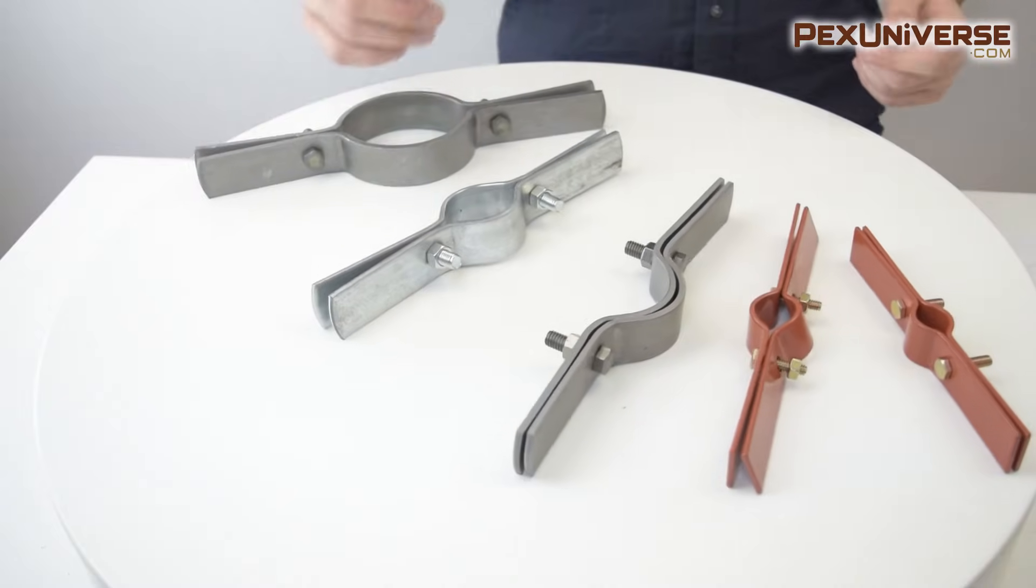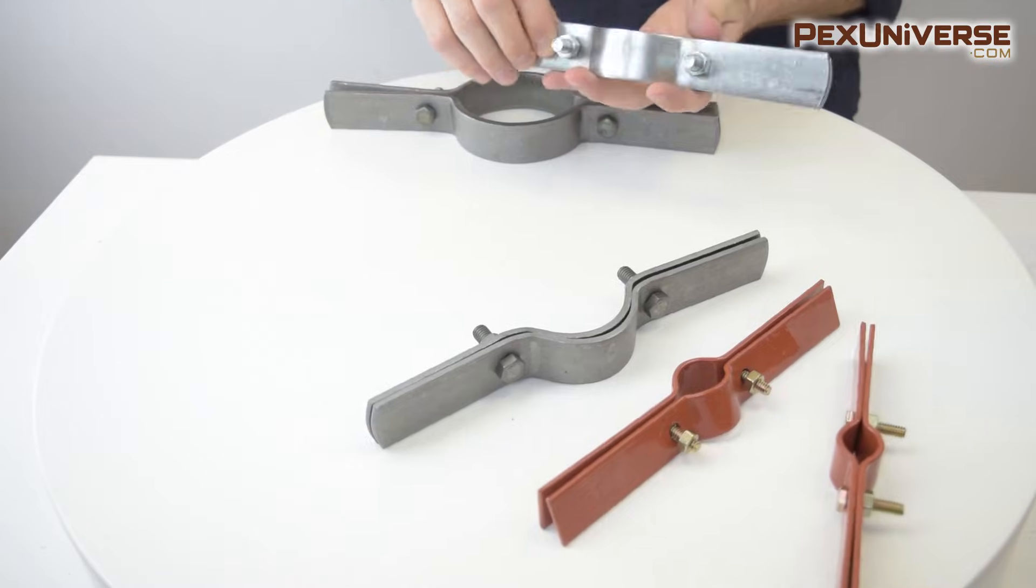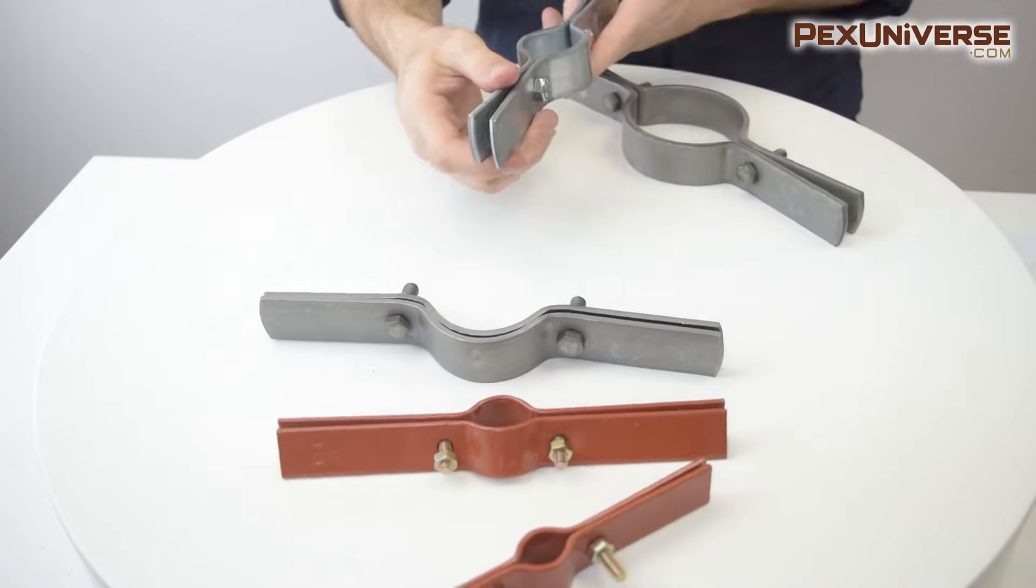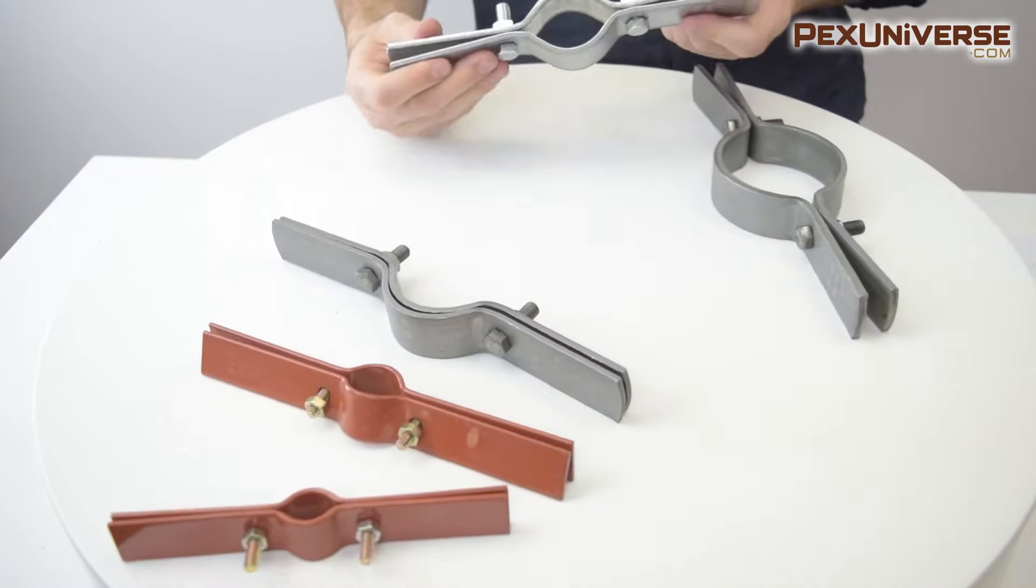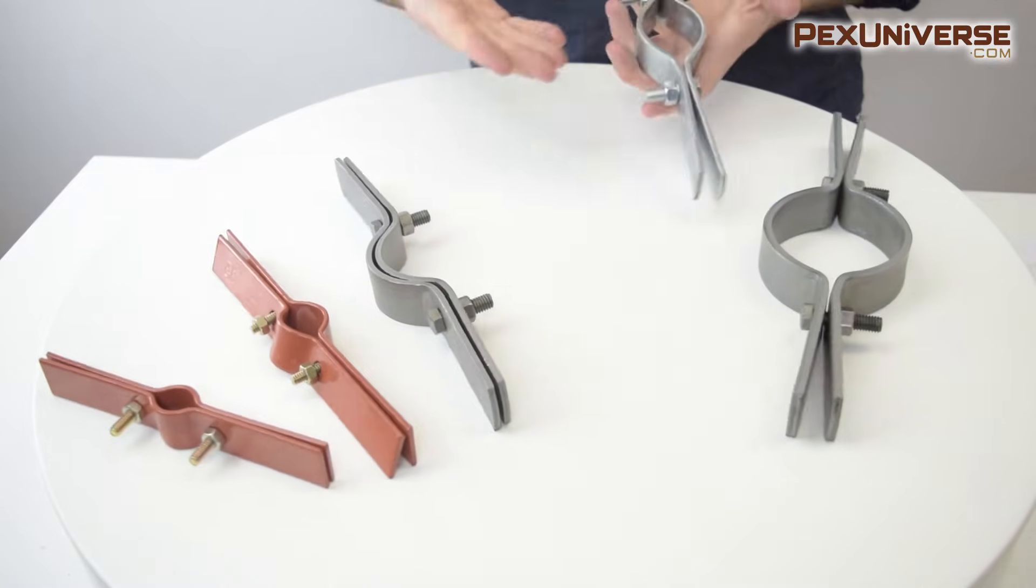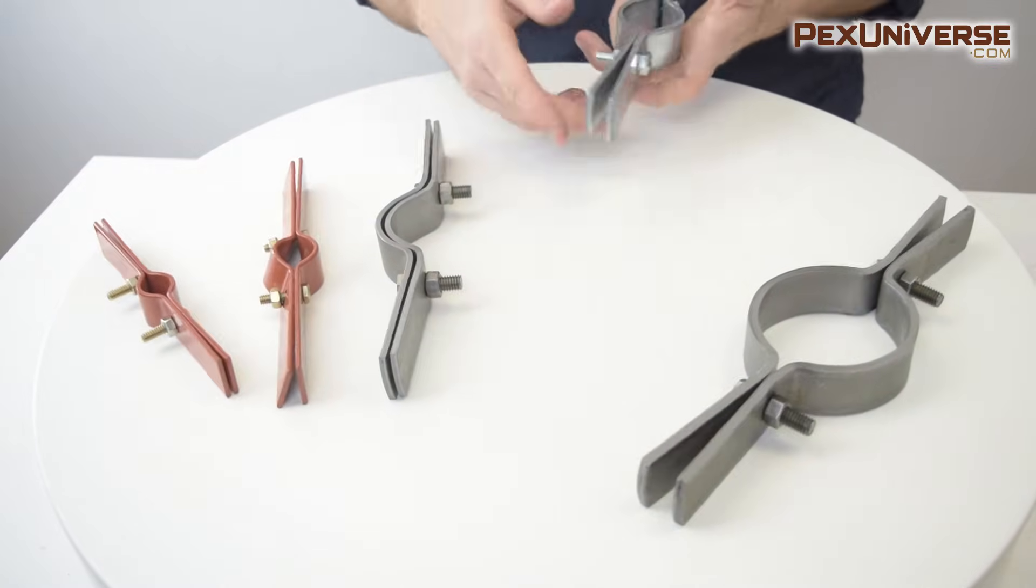Riser clamps are designed to support vertical pipe runs where they penetrate the floor. Each clamp includes two brackets, two bolts and two nuts, and various options are available for copper, black, cast iron and PVC pipes.